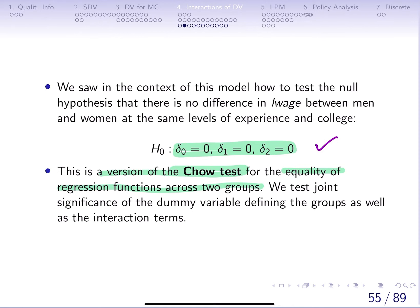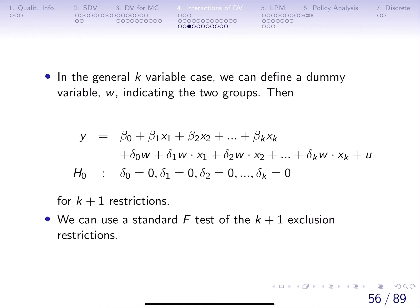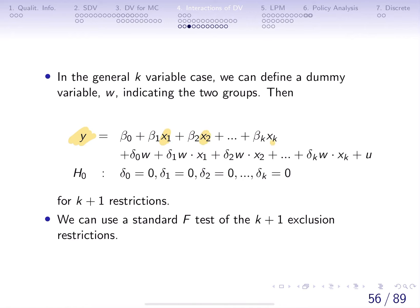If the null is true, we don't need to include those differences. So we are testing for the joint significance of the dummy variables defining the groups as well as the interaction terms. More generally, y depends on the quantitative variables x1 through xk, but also depends on the dummy variable w, and then you have interaction terms for each of the k quantitative explanatory variables.